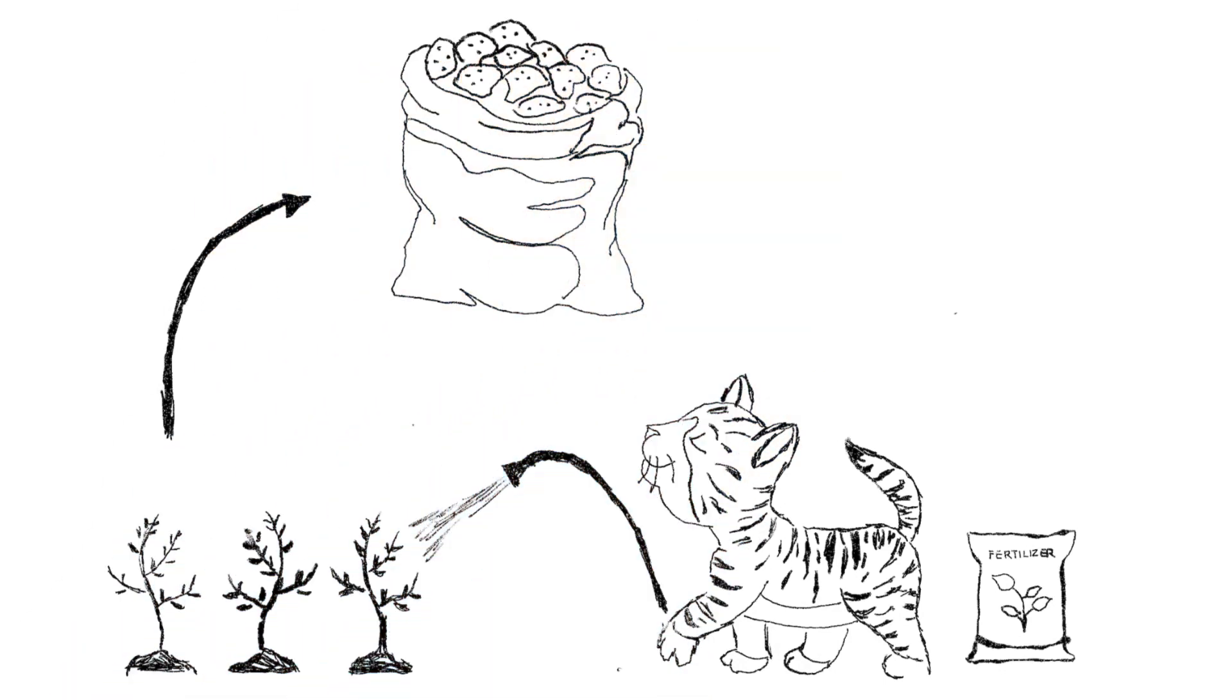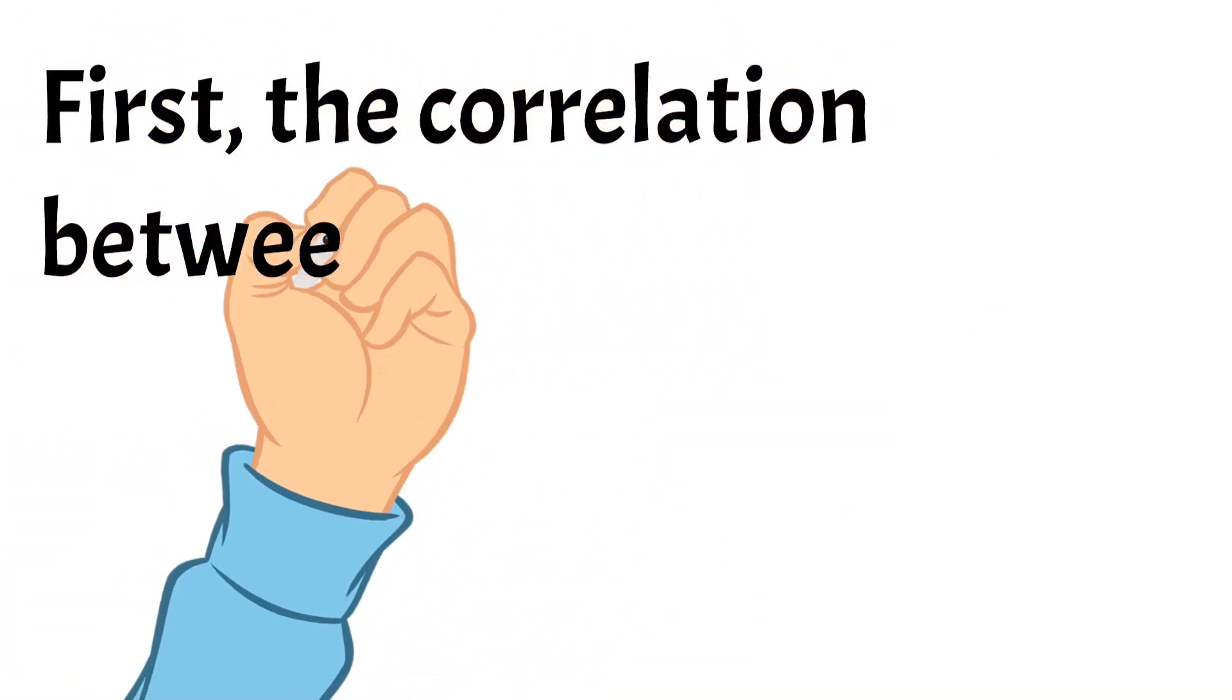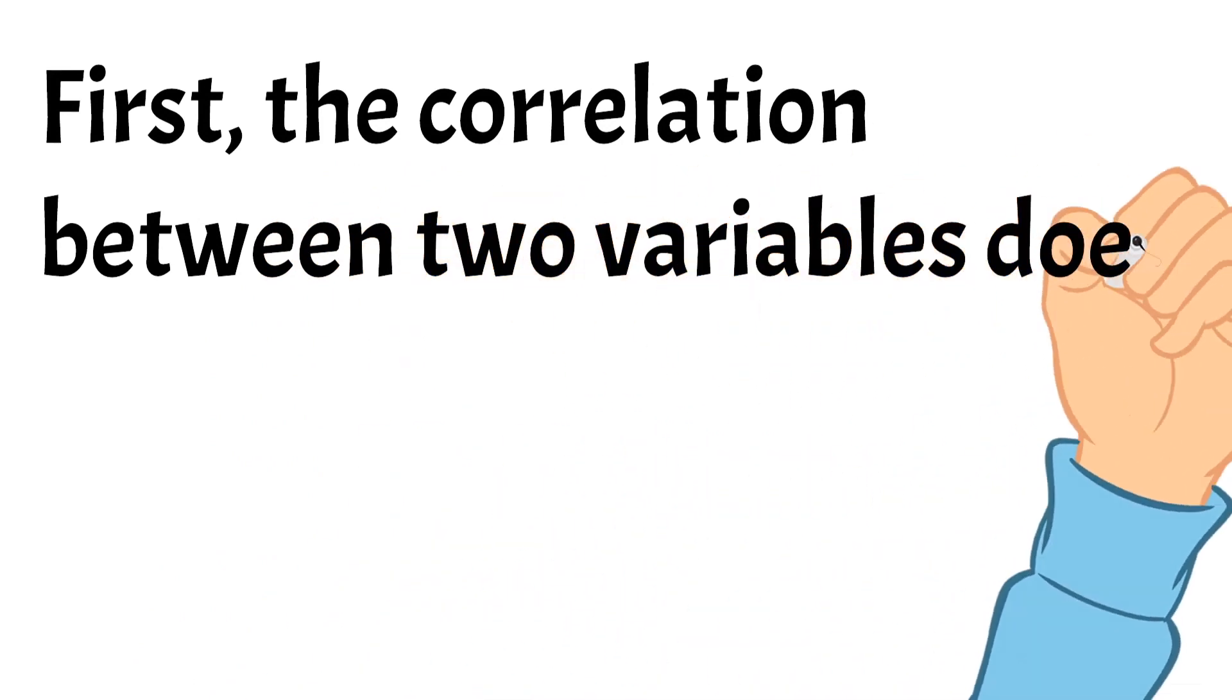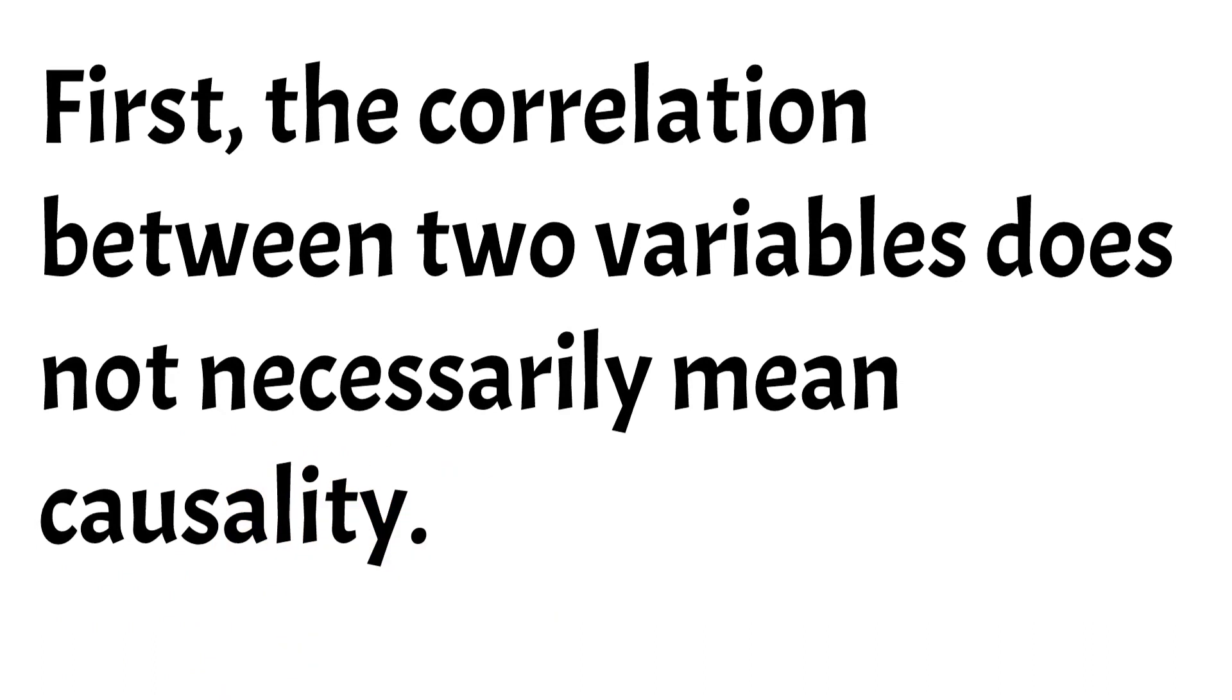We should keep in mind some points. First, the correlation between two variables does not necessarily mean causality. Identifying an association between variables is a starting point. It helps establish a causal relationship, but correlation and causality are not identical concepts.